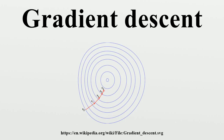A red arrow originating at a point shows the direction of the negative gradient at that point. Note that the gradient at a point is orthogonal to the contour line going through that point. We see that gradient descent leads us to the bottom of the bowl, that is, to the point where the value of the function is minimal.